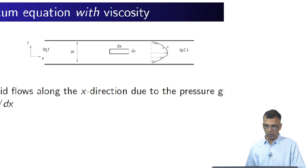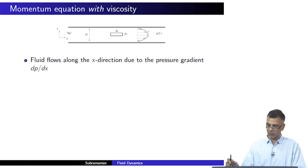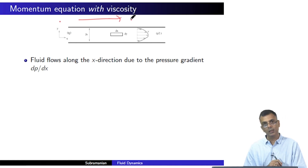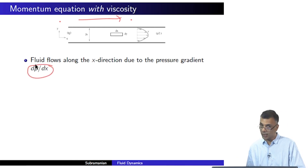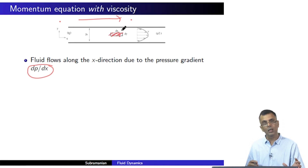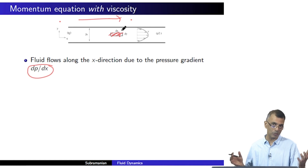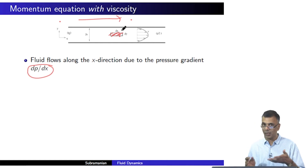The fluid flows along the x-direction due to the pressure gradient dp/dx. If the fluid is flowing in this direction, it is because the pressure here is larger than the pressure there — in other words, there is a non-zero dp/dx. This would be one kind of force, and it would have to be balanced by another kind of force, since the net force on this fluid element is equal to zero in steady flow.